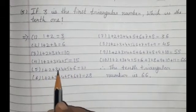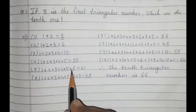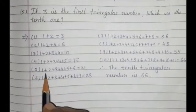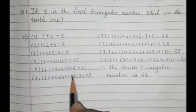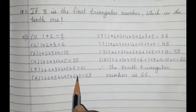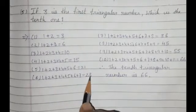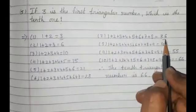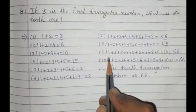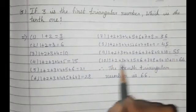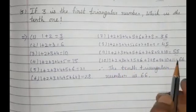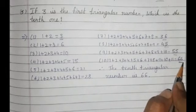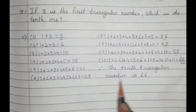Continuing the triangular numbers: 21+7=28 (sixth), 28+8=36 (seventh), 36+9=45 (eighth), 45+10=55 (ninth). And the 10th triangular number: 55+11=66. Therefore, the 10th triangular number is 66.